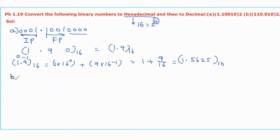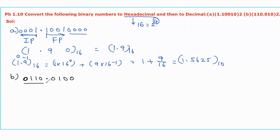Now let us come to the second number, that is 110.010. This is a floating binary number having two parts: integer part and fractional part. To convert into hexadecimal we have to append one more 0 towards the left side and one more 0 towards the right side. Now we divide these bits into groups starting from LSB for the integer part and starting from MSB for the fractional part.